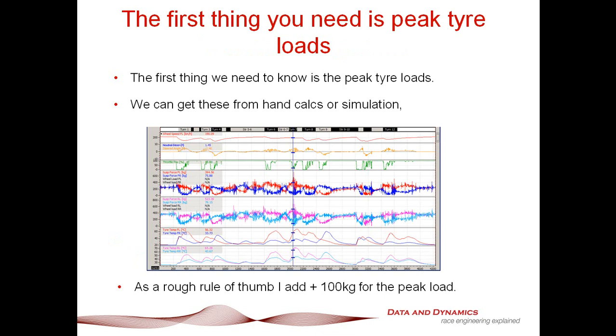So, the first thing we need to do is we need to determine where the peak loads are. Now, you can do this in a number of ways. You can do it through data, you can do it through hand calculations, or you can do it through simulation. Now, the great thing about ChassisSim is that you could probably do this either using our lap time simulation, or you can do it using our track replay simulation. Either way, it's totally up to you. But the moral of the tale here is we need to get some idea of where the max tire load is going to be because that's going to determine our peak tire load or our LP.